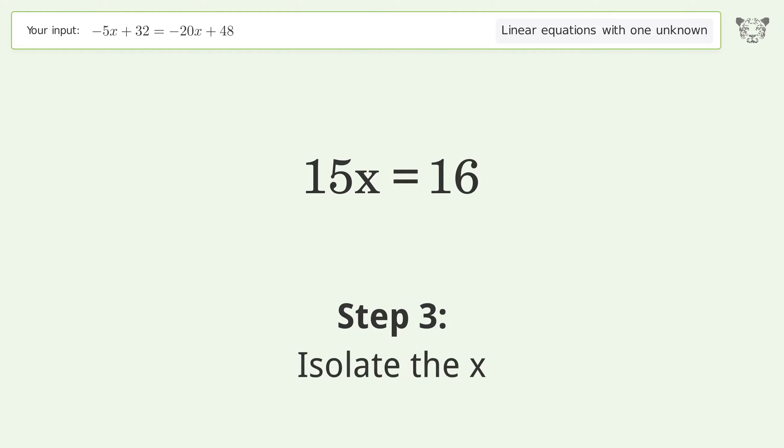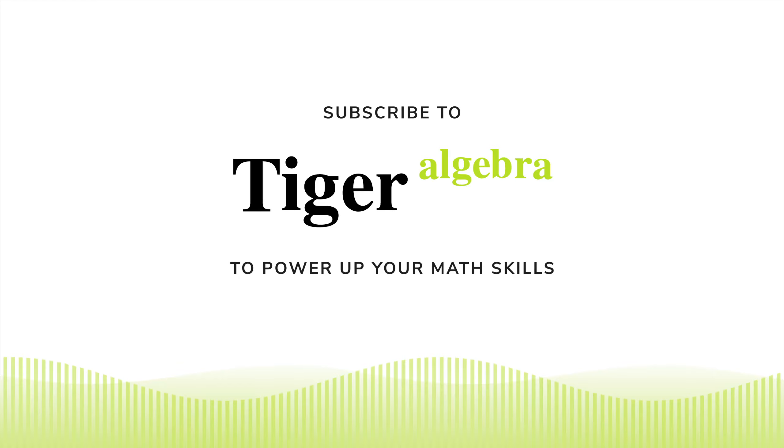Isolate the x by dividing both sides by 15. Simplify the fraction. The final result is x equals 16 over 15.